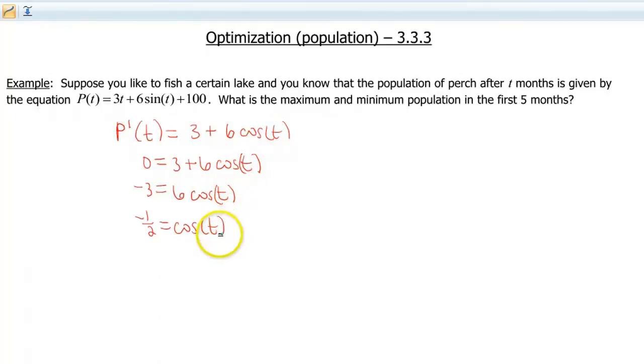So now we gotta dig back into our trig skills and figure out what the values of t are gonna be. And then we're also gonna need to think about what this first 5 months has to do with anything as well. So if you think back to your unit circle, we know cosine is negative in the second quadrant and the third quadrant. So now you gotta think about your reference arc. The cosine of what is gonna give us negative 1/2? And that turns out to be π/3.